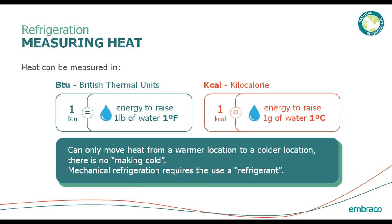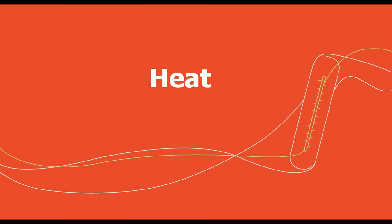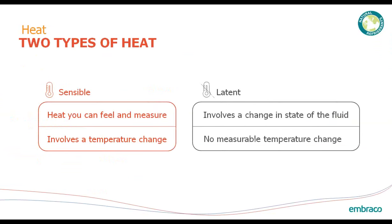You can only move heat from a warmer location to a colder location. There is no such thing as creating cold, and mechanical refrigeration will require the use of a refrigerator. There are two types of heat. Sensible heat is heat that you can feel and measure, and it involves a temperature change. Latent heat involves a change in state of the fluid, and you will see no measurable temperature change. We'll cover later on why these two different types of heat are important when designing a refrigeration system.